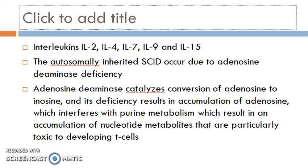Adenosine deaminase catalyzes the conversion of adenosine to inosine. Its deficiency results in accumulation of adenosine, which interferes with purine metabolism and leads to an accumulation of nucleotide metabolites.